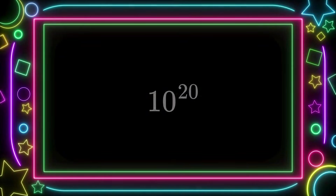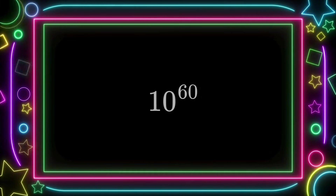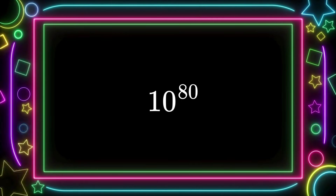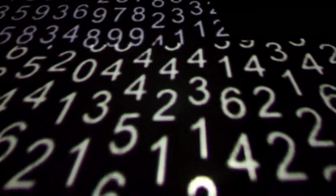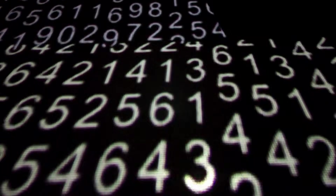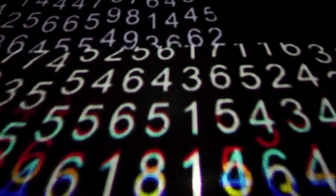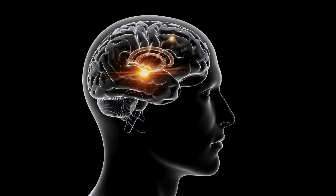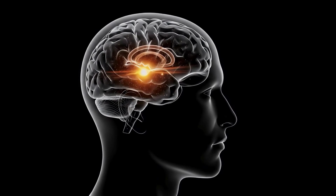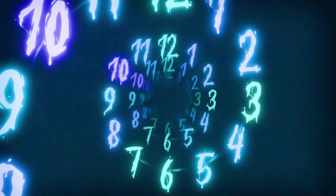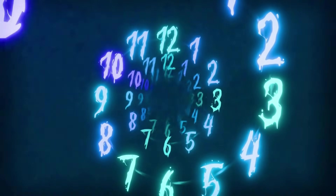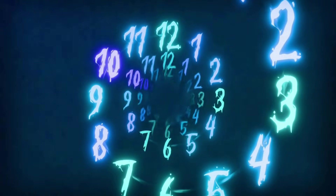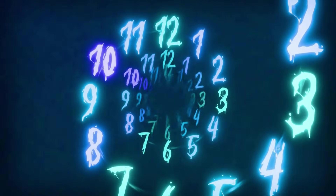And we continue: 10 to the twentieth, 10 to the thirtieth, 10 to the fiftieth, 10 to the sixtieth, 10 to the seventieth, 10 to the eightieth, which is the number of atoms in the observable universe. And that alone is already an absurdly large number. But mathematics doesn't care. And neither do I. So let's increase more.